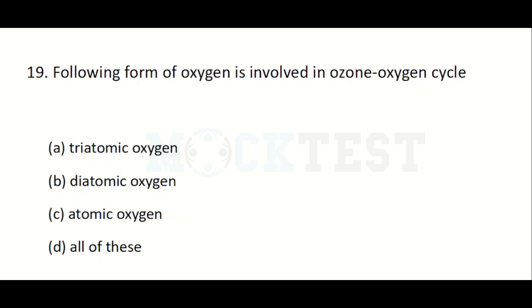The following form of oxygen is involved in the ozone-oxygen cycle: Option A: triatomic oxygen. Option B: diatomic oxygen. Option C: atomic oxygen. Option D: all of these. The answer is all of these — triatomic oxygen, diatomic oxygen, and atomic oxygen are all involved in the ozone-oxygen cycle.